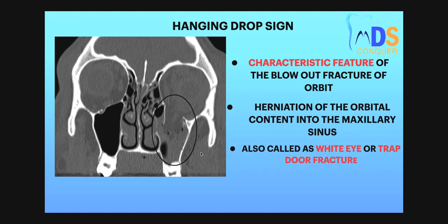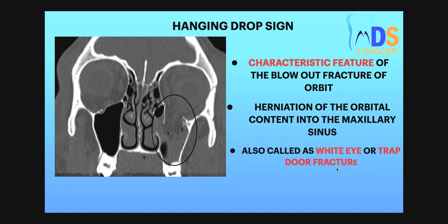There are other names for the blowout type of fracture. It is also called the white eye or drabdo type of fracture. This point is very important — the other names for the blowout type of fracture are white eye or drabdo type of fracture.